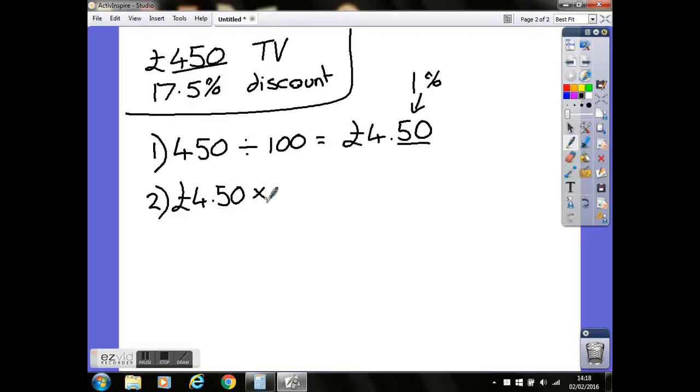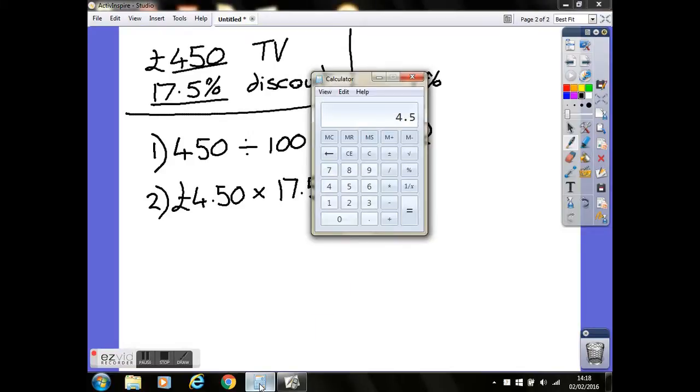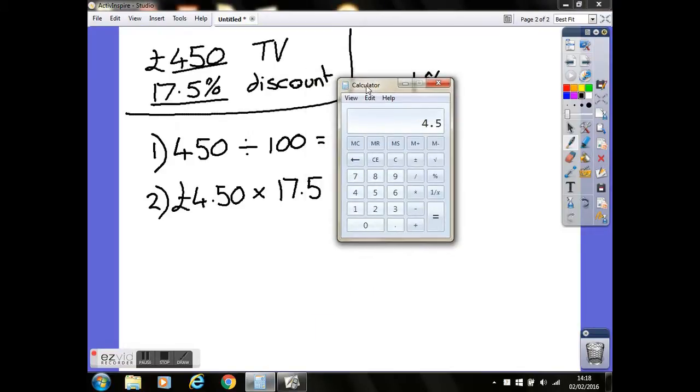Second step is to multiply it by whatever percentage we're looking for. In our case here, 17.5. So 4.5 multiplied by 17.5 equals £78.75.